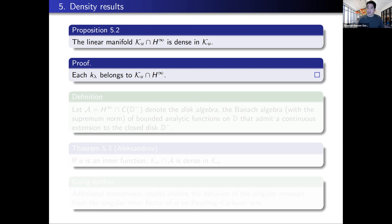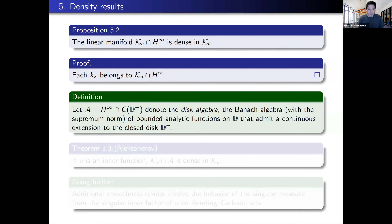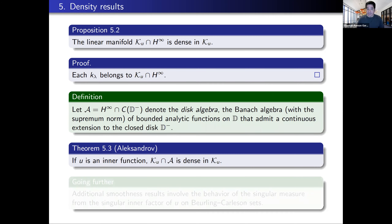We're going to let script A denote the disk algebra — that is H∞ intersect the algebra of functions that are continuous on the closed unit disk but analytic on the interior. These are the H∞ functions that admit continuous extensions to the closed unit disk. There's a very deep and important result of Alexandrov which says something very surprising: if U is any inner function, then the intersection of the model space K_U with the disk algebra is dense. This is not obvious — say if U is a singular inner function or has a singular inner factor, it's really hard to identify a concrete function in the model space that is continuous up to the boundary.